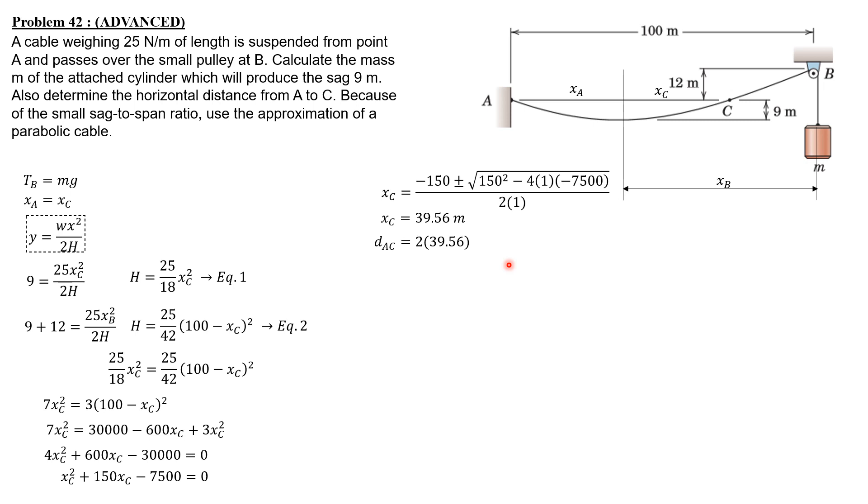From there we can now compute the distance from A to C, which is 2 times 39.56, so it is 79.12 meters horizontal distance between A and C. Then for the mass, tension at B is M times G.